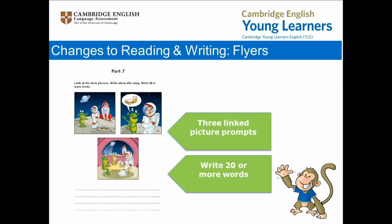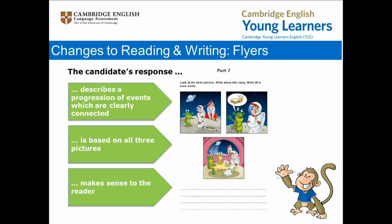Like Movers Part 6, this task has been developed and trialled extensively in various countries. It aims to give children the opportunity to produce extended written language through a task that is fun, level-appropriate and age-appropriate. Candidates' responses to flyers reading and writing Part 7 are marked on a scale from one to five. A zero mark means that the question was not attempted or was totally incomprehensible. A response which scores five marks describes a progression of events which are explicitly connected to each other, using connecting words or other connective devices such as pronouns for referencing people, animals or objects, and is based on all three pictures and requires minimal effort on the part of the reader to make sense of it.